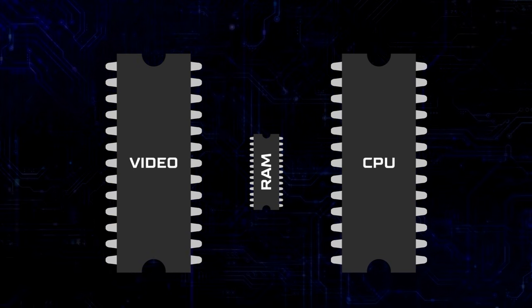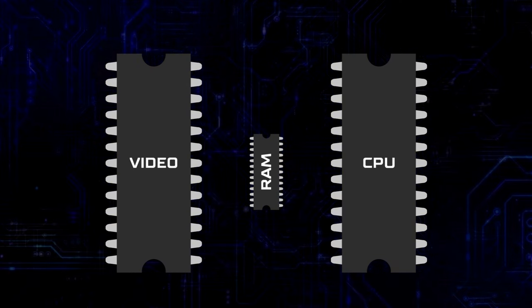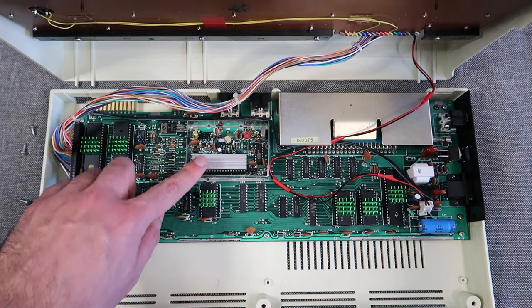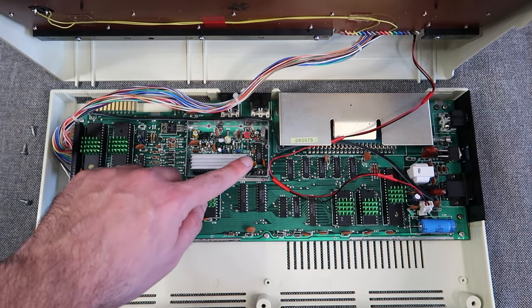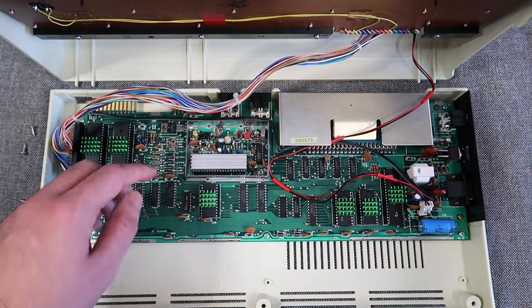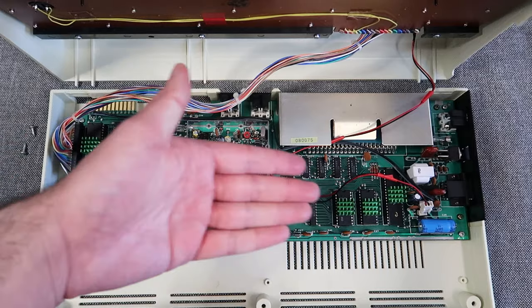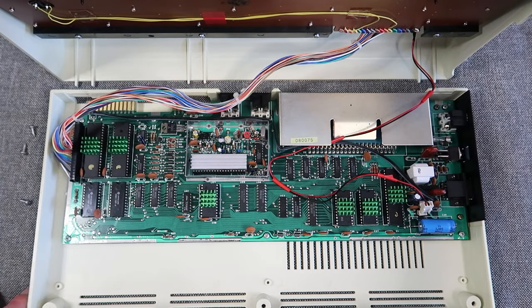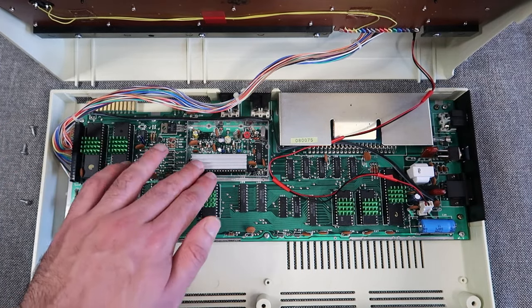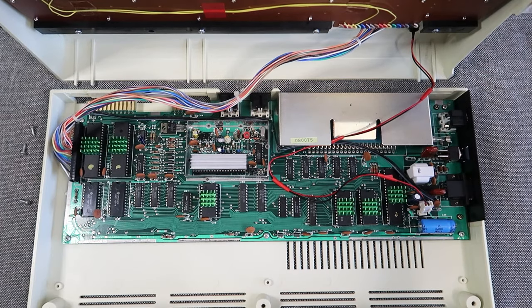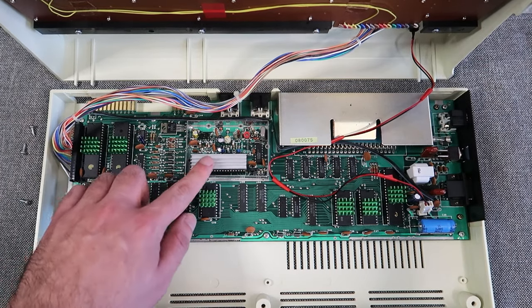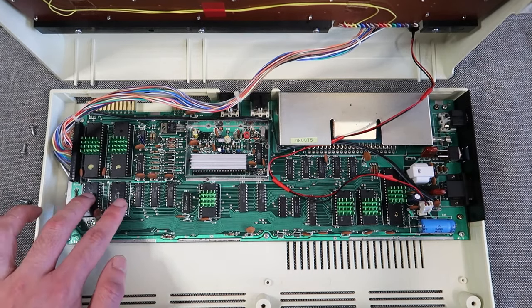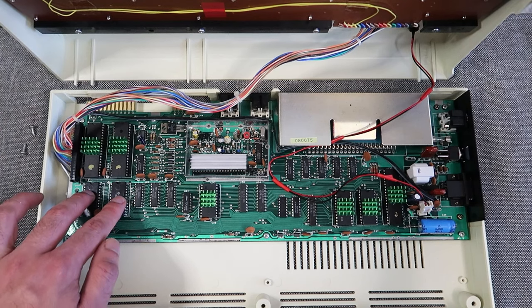Other important chips may need to look at a particular part of RAM as well. One such chip is this one right here — the Video Interface Chip, or VIC. This is the chip Commodore made this whole computer around. This chip is responsible for the audio and visual output from this computer system. The interesting thing about this chip is that it constantly looks at sections of RAM to display what we see on the screen.